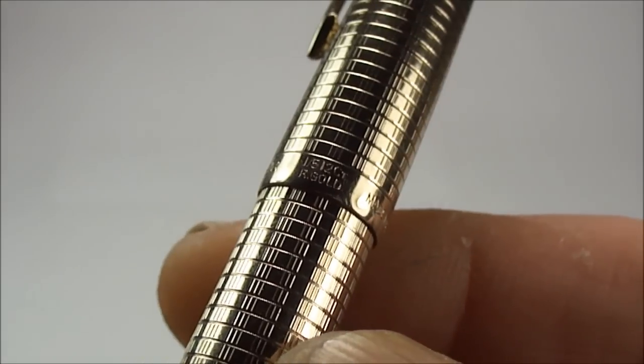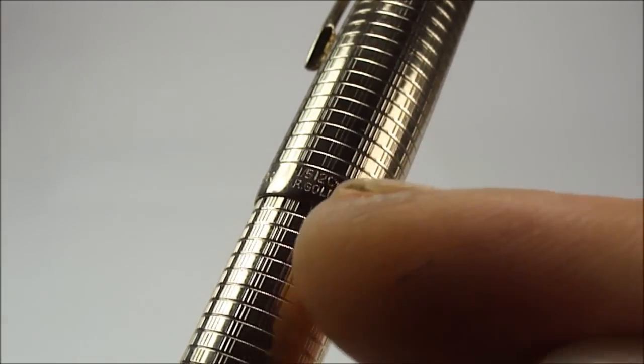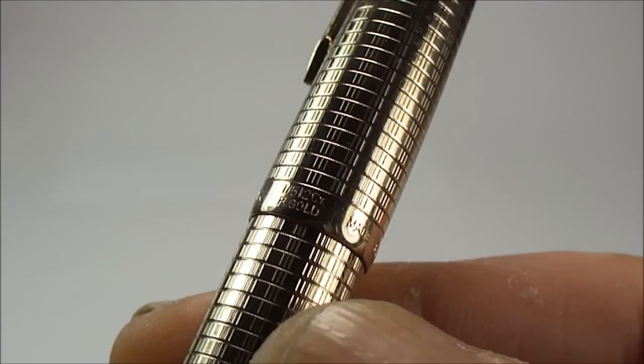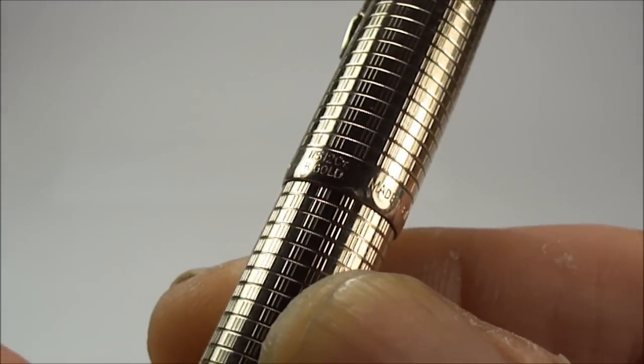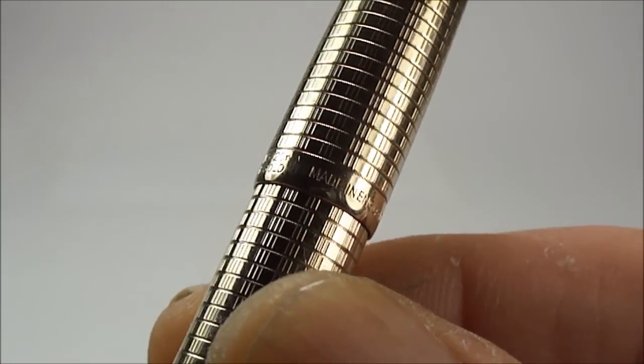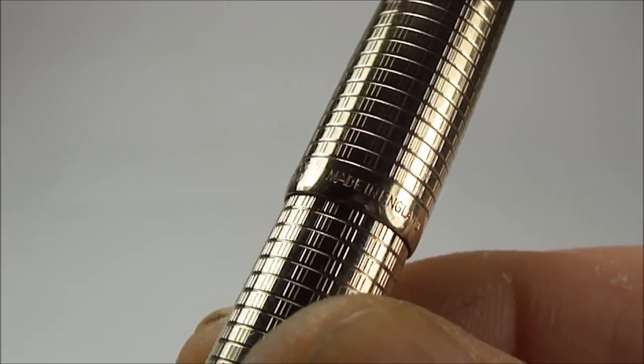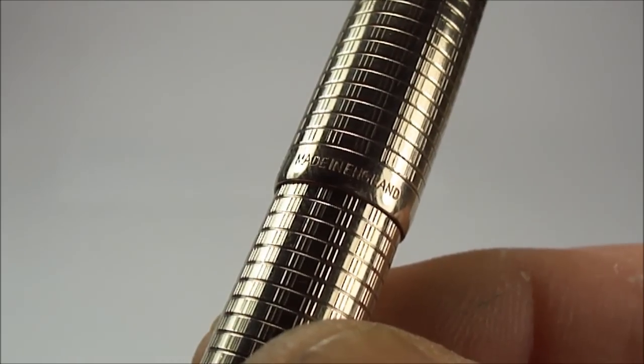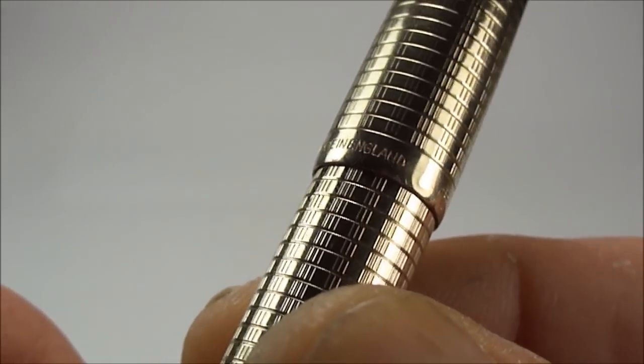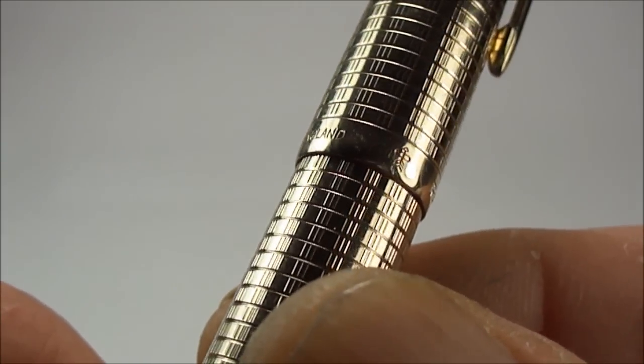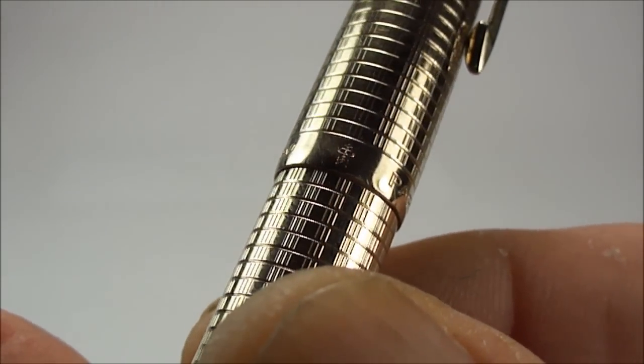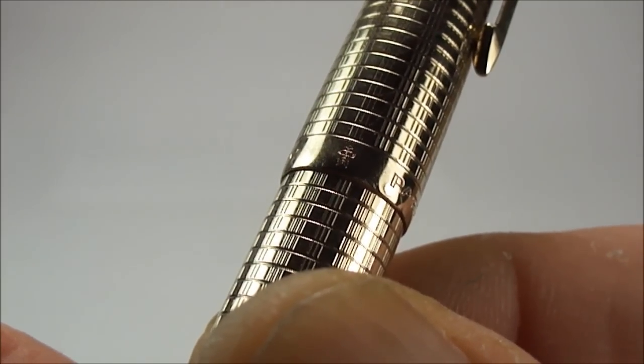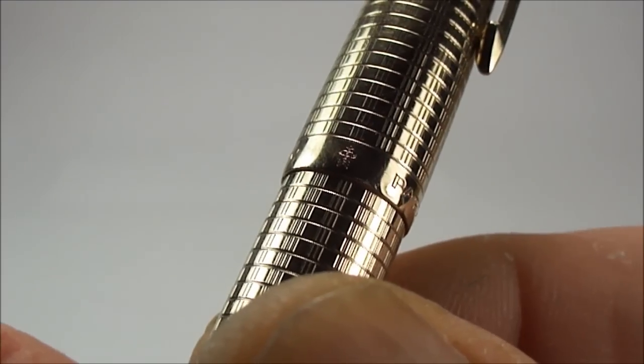The beauty about the Consort is that the one in five 12 carat is actually thicker than the normal rolled gold or gold filled pens. If we turn it round you'll see it says made in England, and on the other side you'll see the Parker symbol with the arrow going through the halo.